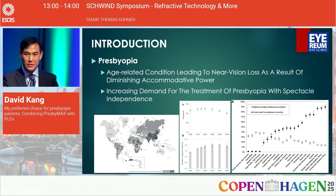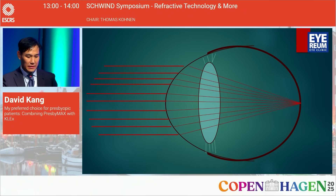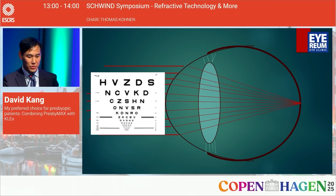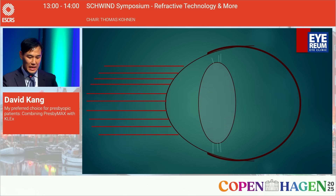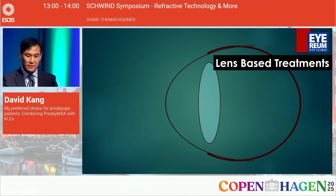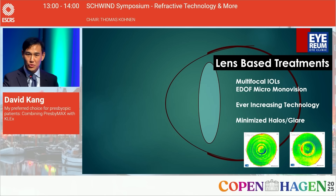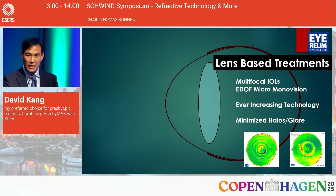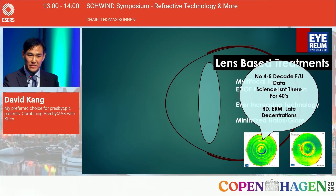Presbyopia is what it's all about. In a young eye with a clear crystalline lens and strong zonules it looks great, but as it ages it thickens, the zonules weaken, and we get presbyopia. Treatment modalities can be lens-based — there are numerous excellent multifocal IOLs with micro-monovision and ever-increasing technology minimizing photic phenomena. However, for patients in their forties, the science isn't there to rule out retinal detachment without a previous PVD, ERMs, or late decentrations.